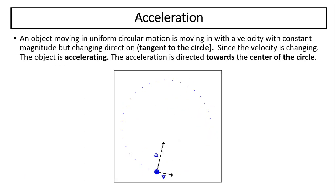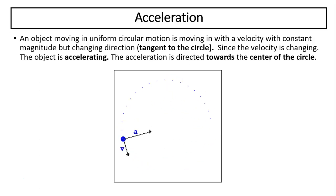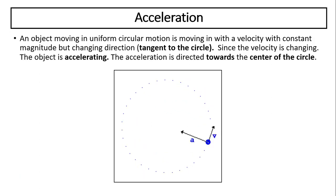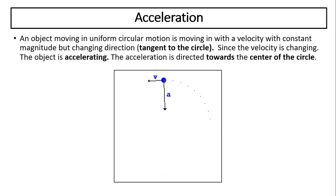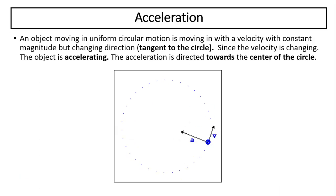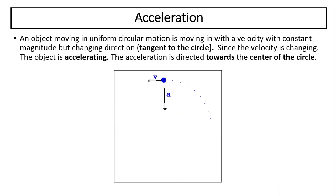Now let's talk about acceleration of uniform circular motion. An object moving in uniform circular motion is changing its velocity. Since velocity is changing, there has to be acceleration, because acceleration is defined as velocity change over time. Acceleration is directed toward the center of the circle, because only the direction of velocity is changing — the speed is not changing.